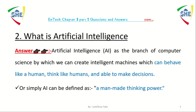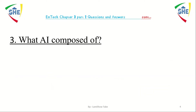Question number two: what is artificial intelligence? Artificial intelligence is a branch of computer science that is used to create a machine which can behave like a human, think like a human, and be able to make decisions like one. Simply, you can define artificial intelligence as man-made thinking power, or a machine which can think as a human being.